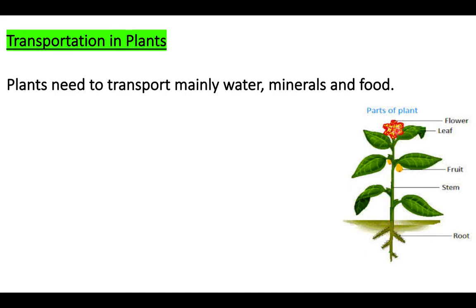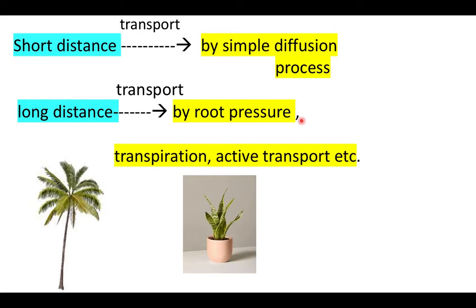The transport of food is bidirectional in the plant, because food prepared in any leaf can be transported to the upper parts of the plant as well as the lower parts and roots. So food transport may be upward or downward. Now, transport in plants can be of two types: short distance transport and long distance transport.